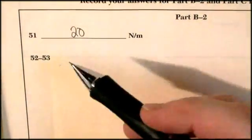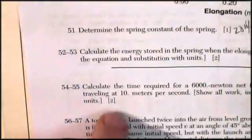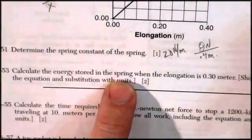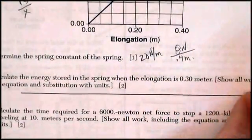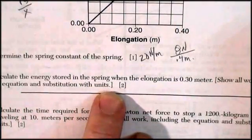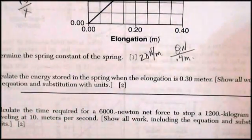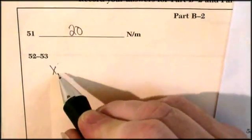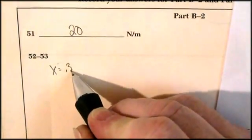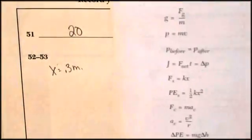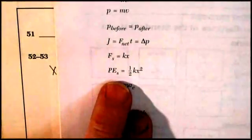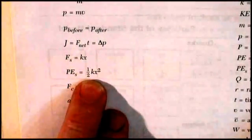I bet you I know what they're going to ask you for two points. Calculate the energy stored in the spring when the elongation is 0.3 meters. Show all your work including the equation substitution with units. All right, well elongation is x and that's equal to 0.3 meters. Now let's see, potential energy in a spring is one-half kx squared.